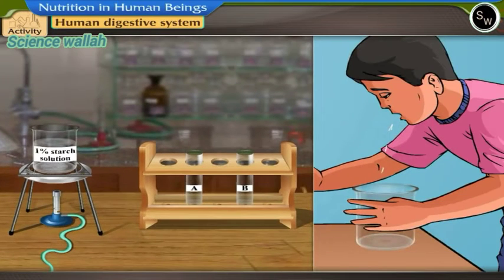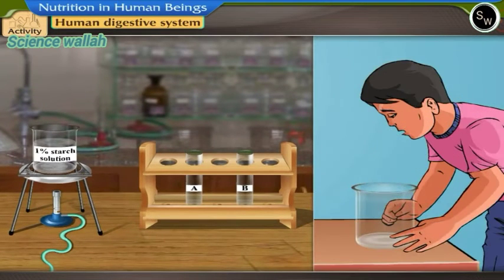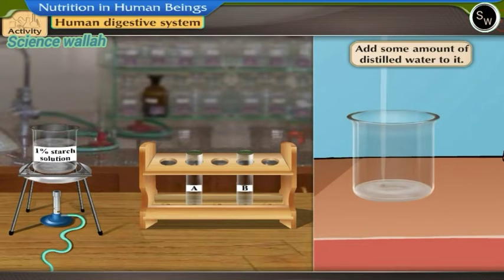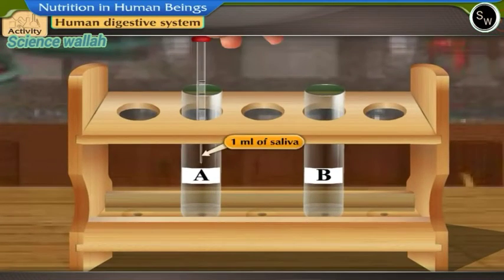Collect saliva from the mouth by spitting into a beaker. Add some amount of distilled water to it. Add 1 ml of saliva to test tube A.